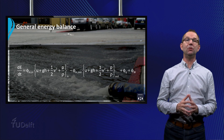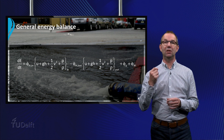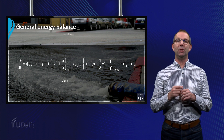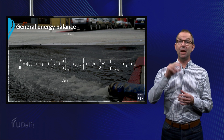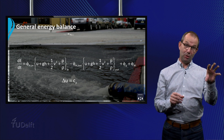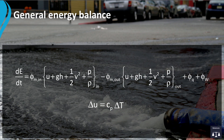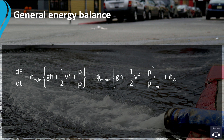Before we introduce these balances, we have to remember that a change in internal energy can be written as the product of the heat capacity of the fluid and the temperature difference. That gives delta U equals C_p times delta T. If we substitute the expression of the internal energy U in the energy balance and rearrange the balance in a mechanical and a thermal part,